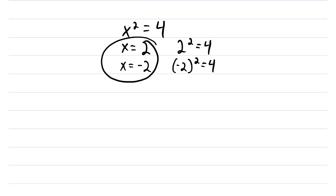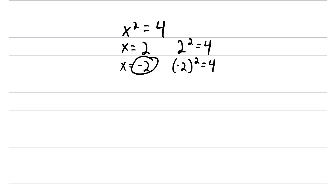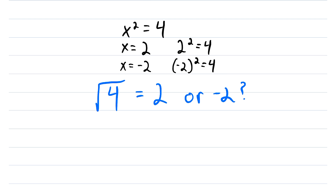So there are two solutions to this equation. There is a positive solution and a negative solution, because every positive real number has a positive and negative square root. But what if, instead of looking at this equation, we just look at the square root of 4? Is this equal to 2, or is it equal to negative 2? Well, this is where we get into the importance of this lesson. This radical symbol here refers only to the principal square root of the radicand, which is the number under the radical.